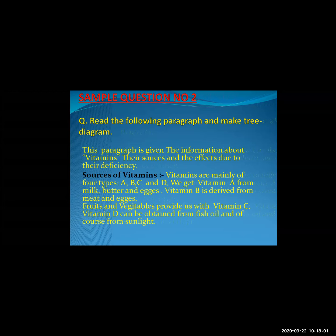Vitamins are mainly of four types: A, B, C, and D. We get Vitamin A from milk, butter, and eggs. Vitamin B is derived from meat and eggs. Fruits and vegetables provide us with Vitamin C. Vitamin D can be obtained from fish oil and of course from sunlight.